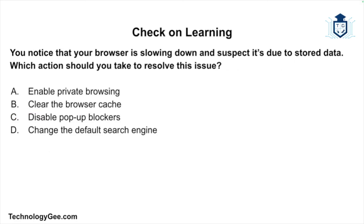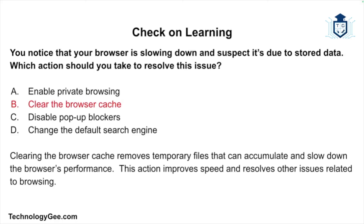Question two: You notice that the browser is slowing down and suspect it's due to stored data. Which action should you take to resolve this issue? Enable private browsing, clear the browser cache, disable pop-up blockers, or change the default search engine? The correct answer is clear the browser cache. Clearing the browser cache removes temporary files that can accumulate and slow down the browser's performance, improving speed and resolving other browsing issues.